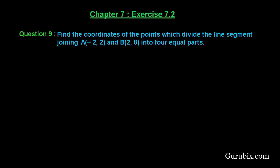Welcome friends. Let us solve question number 9 of exercise 7.2 of chapter 7. The question says: find the coordinates of the points which divide the line segment joining A(-2, 2) and B(2, 8) into 4 equal parts. This is a very important question. Here we shall apply the formula for coordinates of midpoints.